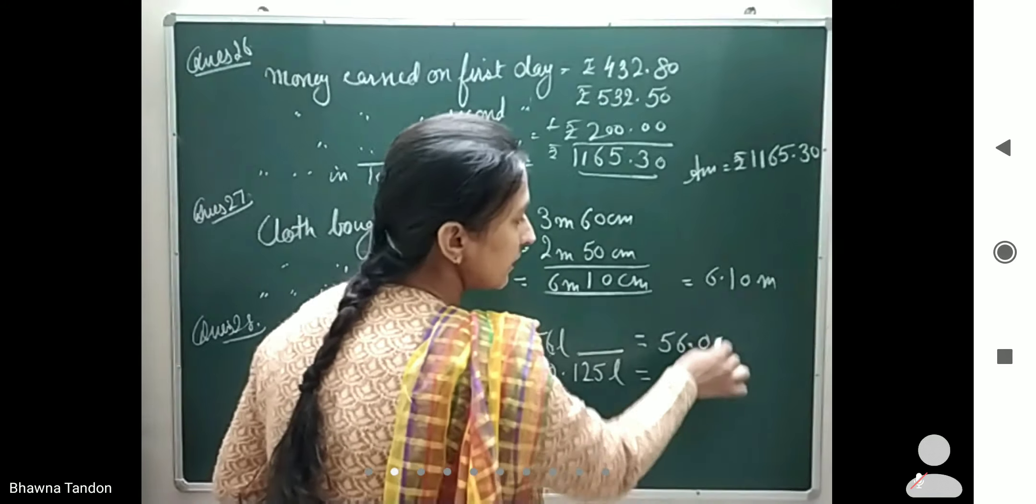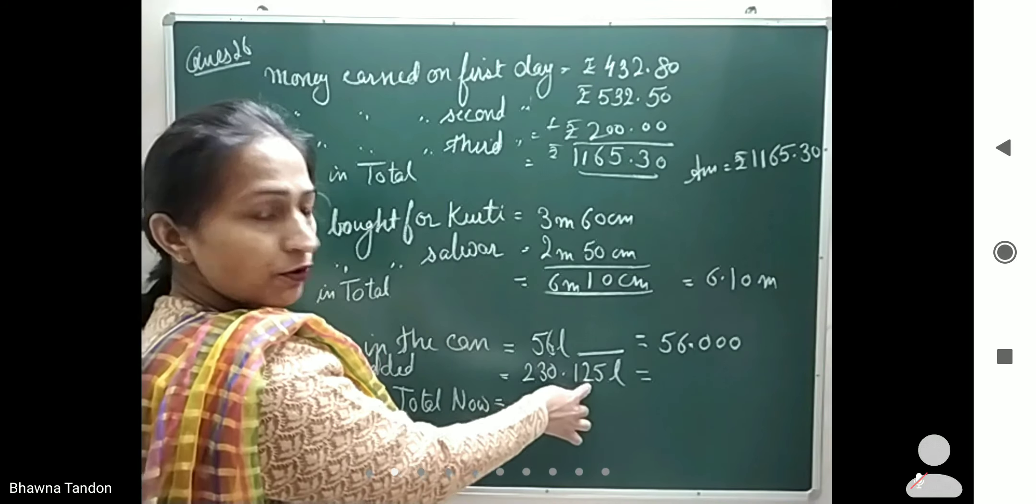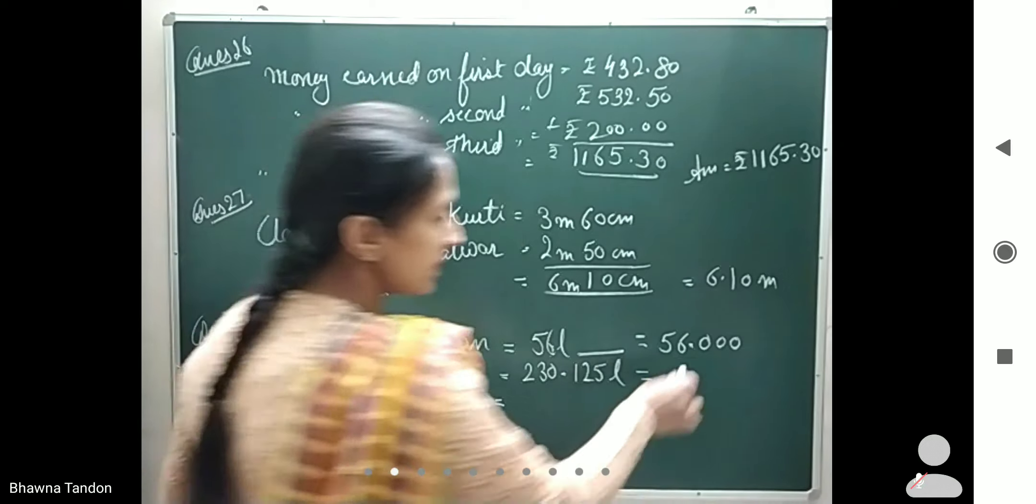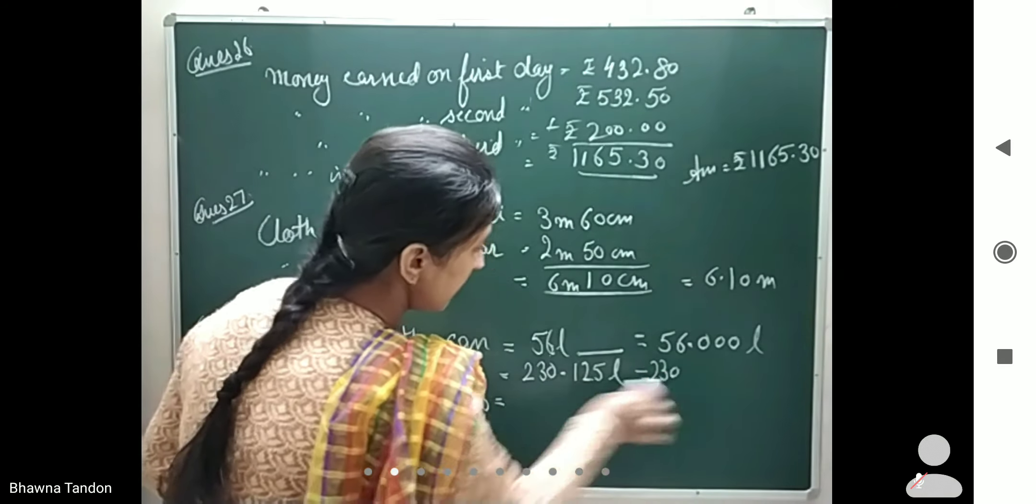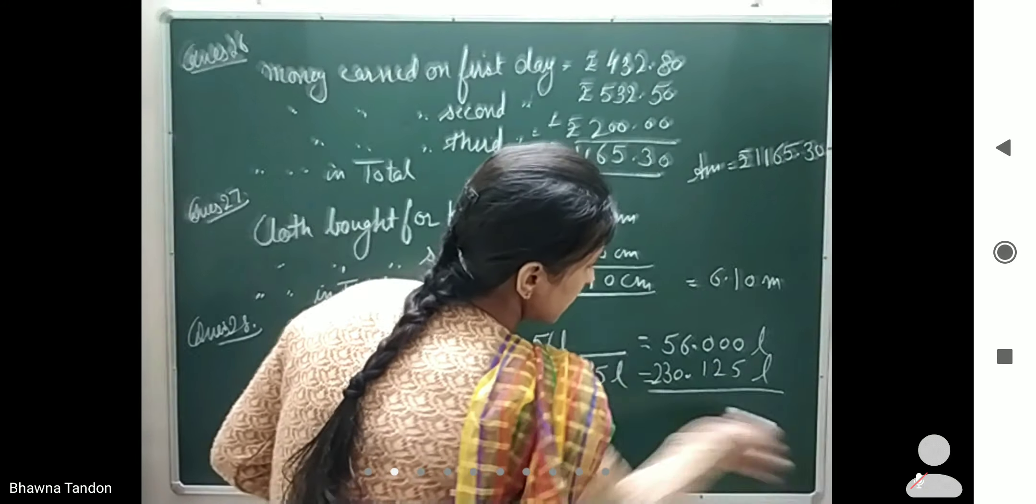That means after the decimal there will be three zeros, because I can see three digits here also. In liters and milliliters, there is a gap of three decimal places. So it will be 56.000, then the second term is 230.125 liters. Then I add.